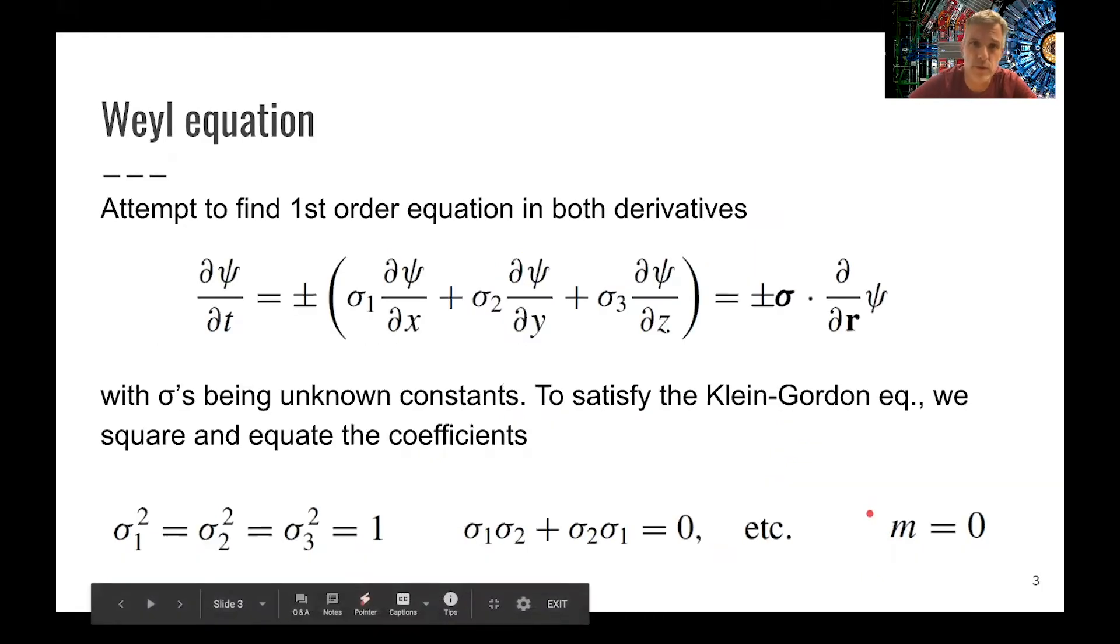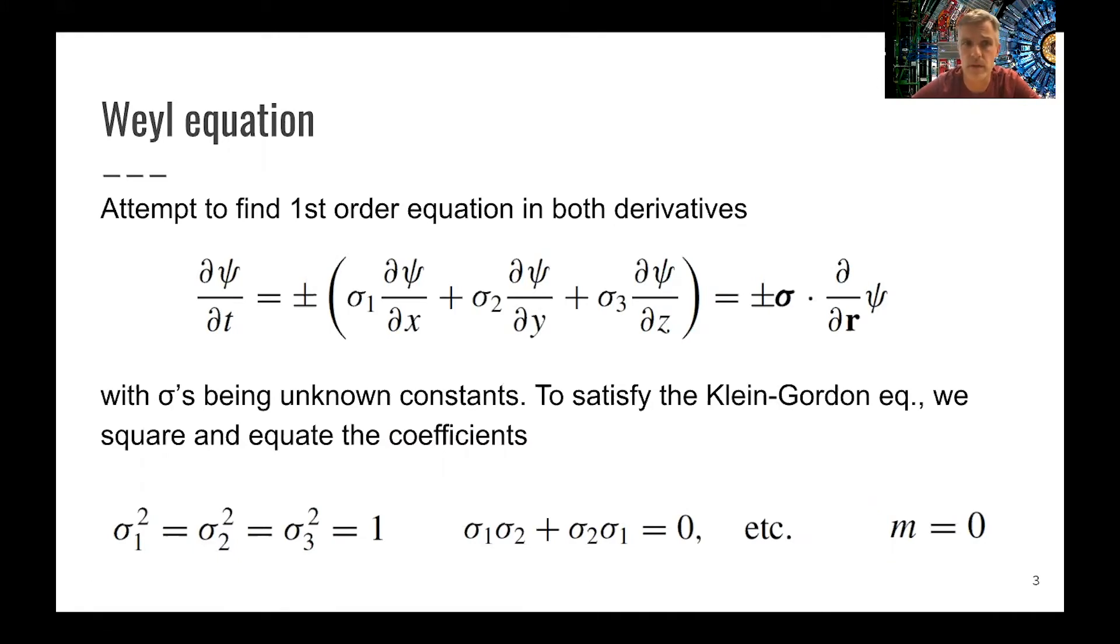So what we want is a first order equation in both derivatives. We'll just start writing this down in general terms and then make sure that this equation holds to the relativistic equation we just saw on the previous slide. We have a first derivative of time and a first derivative of space.